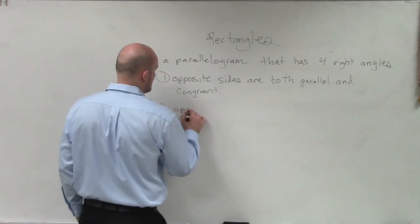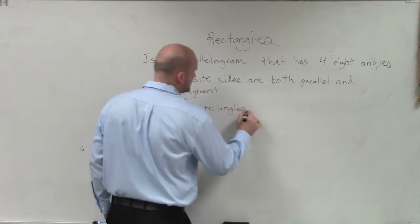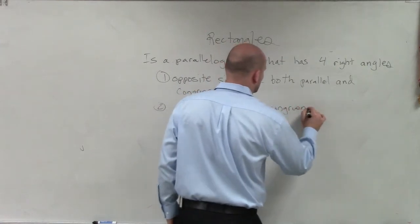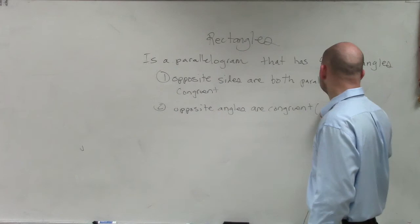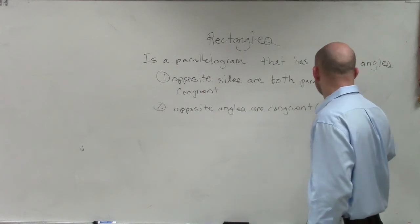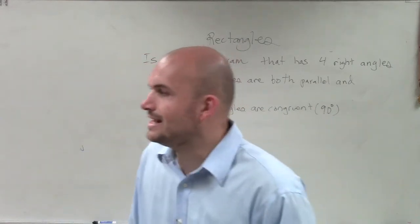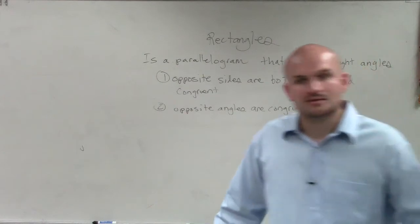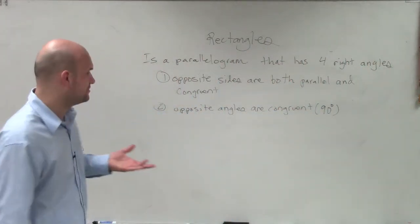You can say opposite angles are congruent, which we already know. But what are those angles equal to? If it's four right angles, that means each angle is 90 degrees. So obviously, the opposite angles have to be equal in measure. Actually, all the angles are equal in measure.